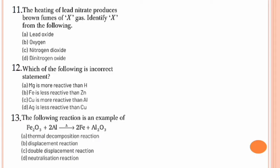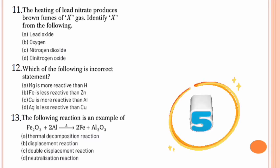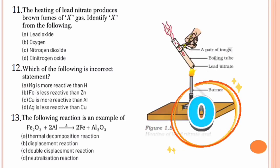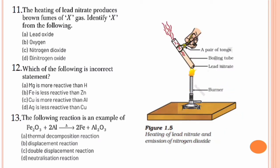The heating of lead nitrate produces brown fumes of X gas. Identify X. Refer to figure 1.5 given on page number 8 of your textbook. From that we can understand that when lead nitrate is heated, it emits brown fumes of nitrogen dioxide, and hence the correct option is option C, nitrogen dioxide.